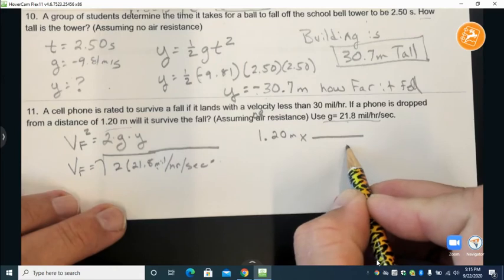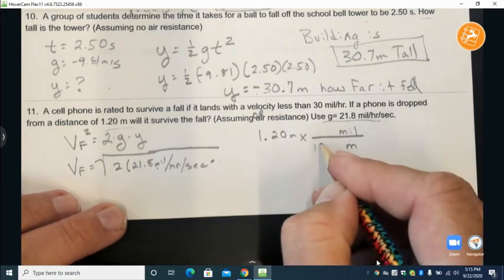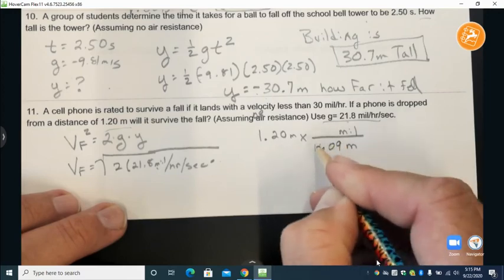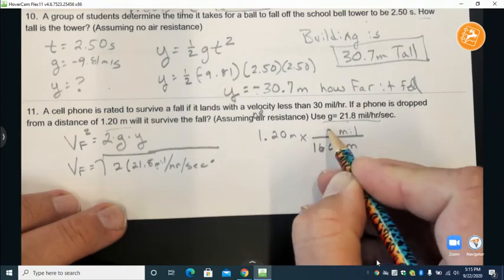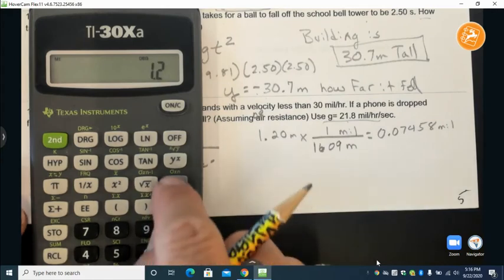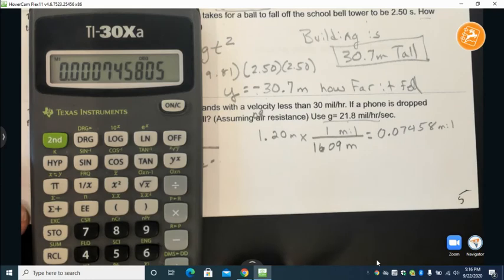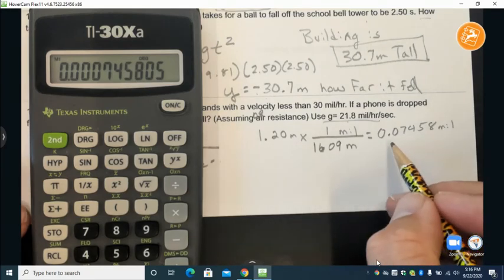We want to cancel meters so we put that on bottom and we're looking for miles. Now it turns out that 1,609 meters is one mile. So we'll check that expression again.